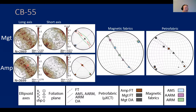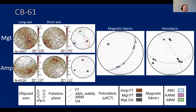In CB55 there is a strong northwest–southeast girdle distribution in both magnetite and amphibole, and this strong distribution is also seen in the magnetic fabrics, with good correspondence across all three petrofabrics: amphibole shape, magnetite shape, and magnetite distribution. In CB61 the magnetite shape shows a strong northwest–southeast girdle, while amphibole shape and magnetite distribution show an east–west, moderately southward-dipping girdle. The magnetic fabrics appear intermediate between the magnetite shape fabric and the amphibole shape plus magnetite distribution fabric, suggesting a mixed control.